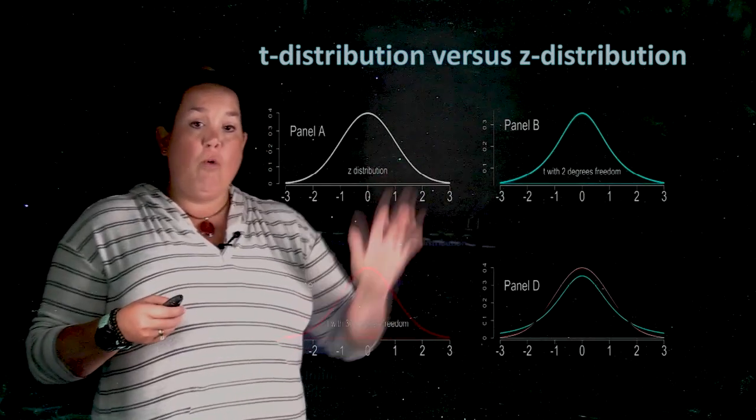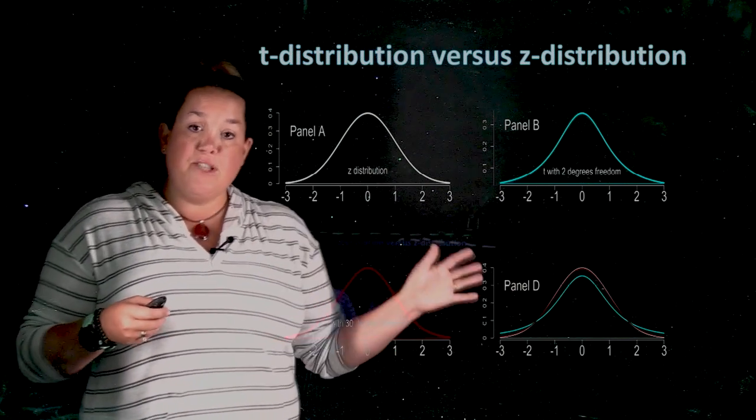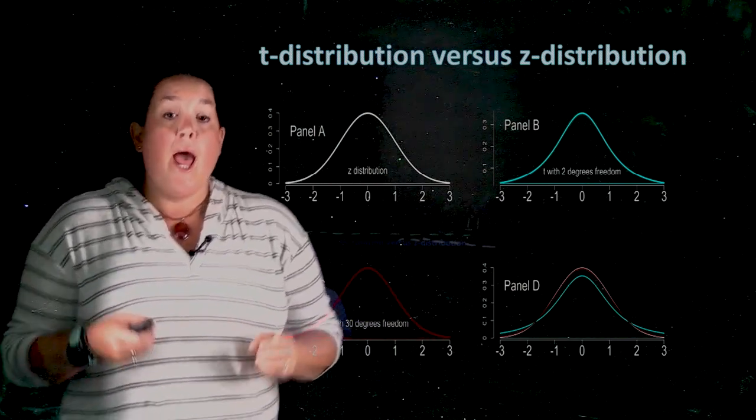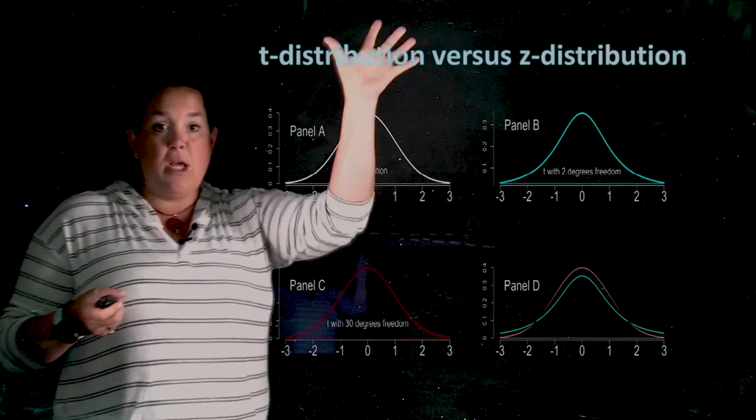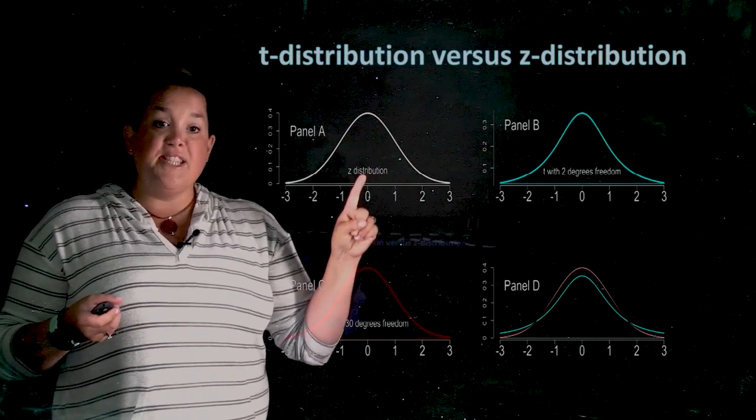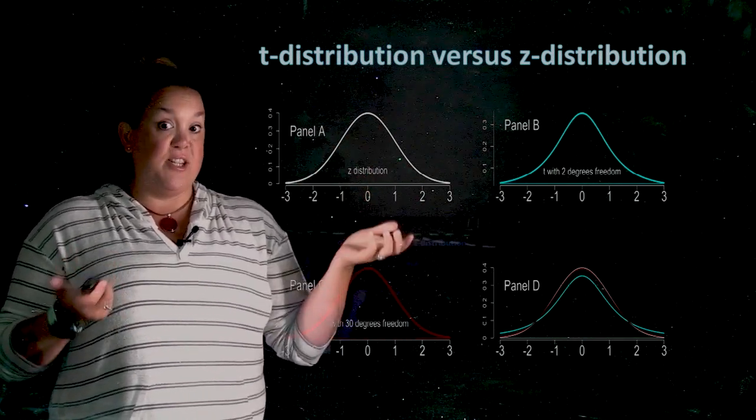Now, here are four different curves representing these different distributions. The first thing you'll notice right here in panel A, this is the z-distribution. So let's talk about the shape.